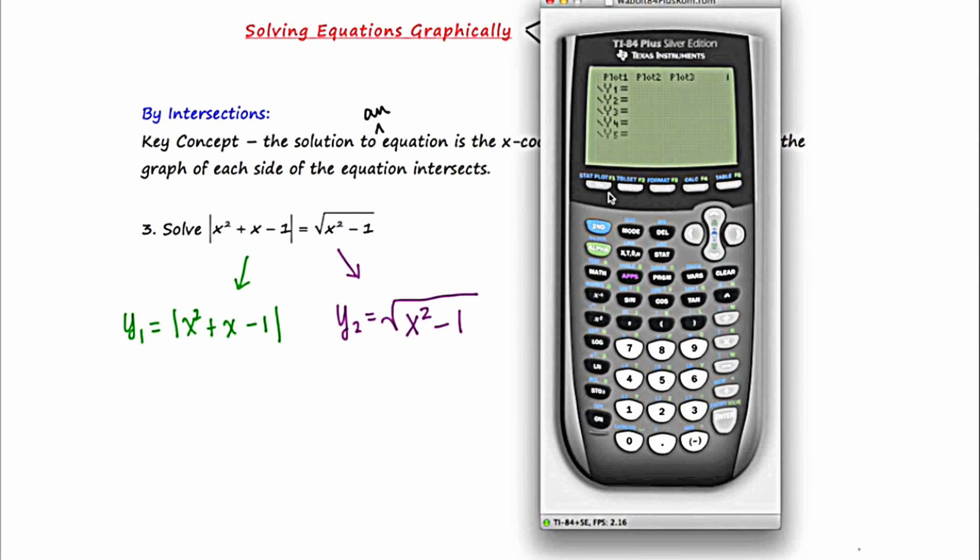I'm going to press the y equals button. And for y one, I'm going to put in the absolute value. And this is tough to find, you're going to press the math button, scroll one over to the right to num, select absolute value, and then type in x squared plus x minus one.